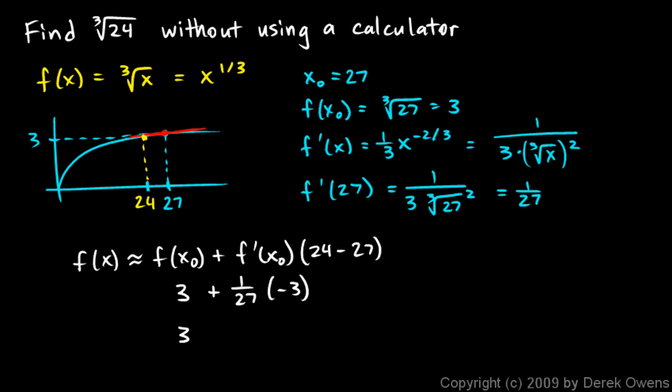This is going to be 3 minus 1/9, or 2 and 8/9. And you might know that that's about 2.889.